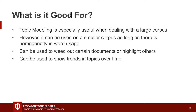Topic modeling can be used to weed out certain documents or highlight others, and can be used to show trends in topics over time. For example, people look at detective fiction — along the lines of Edgar Allan Poe in the 1800s — and want to see throughout the entire 1800s if topics changed and how they talked about mysteries over time. That's something you can do.